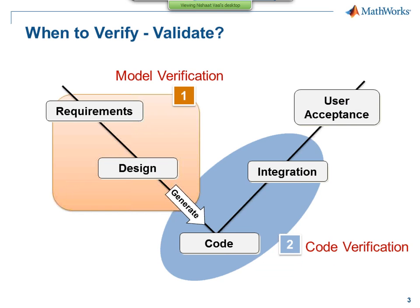What we intend to do today is use this design V, a simplified version of a typical design description environment. On the top left we have our requirements where you start your design, and on the top right you have your actual end product. In between there are various stages: developing an algorithm, creating C, C++, or ADA code, doing integration work, and testing at a model and code level. Jay and I will connect to this design V at every point we can.